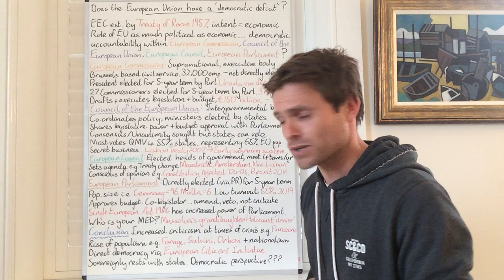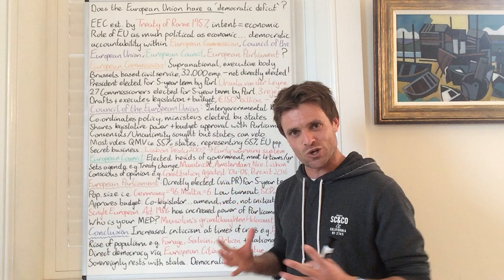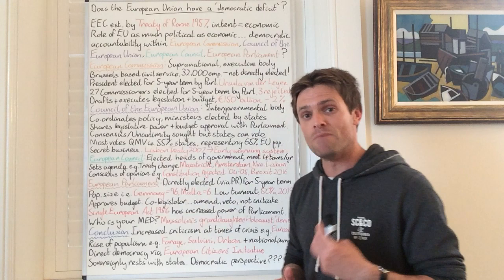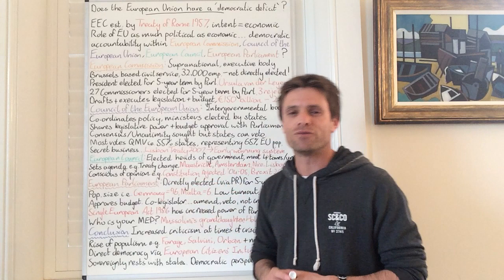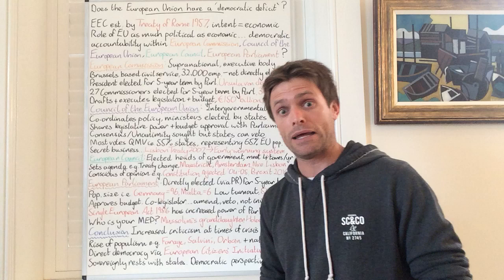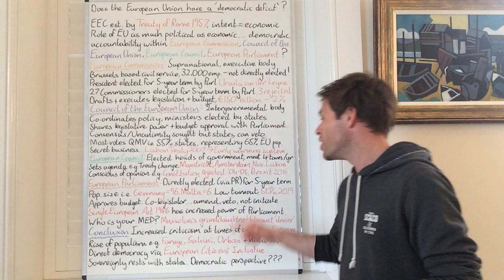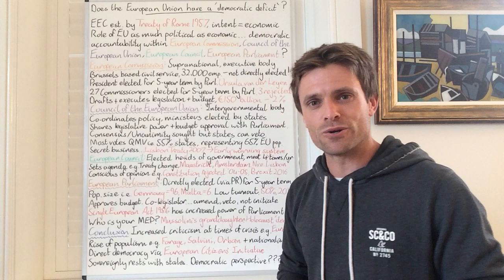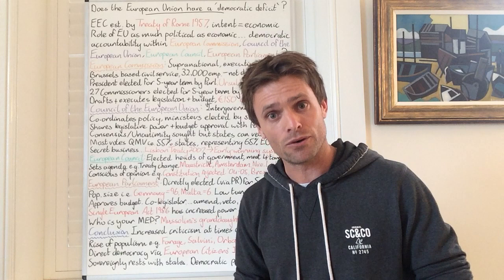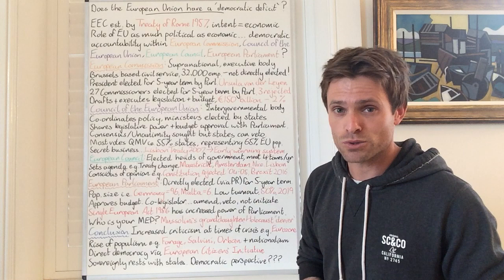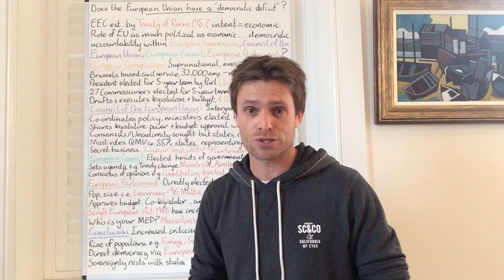The European Union sometimes seems to get treaty change done through the back door. However, elected heads of government may feel accountable to their national electorates on the most contentious decisions — and a written codified constitution, akin to a United States of Europe, is as contentious as it gets. National politicians within the European Council will also be very aware of the impact of Brexit — if a country's population dislikes the European project enough, they may force the country to leave, as occurred with Brexit in 2016.